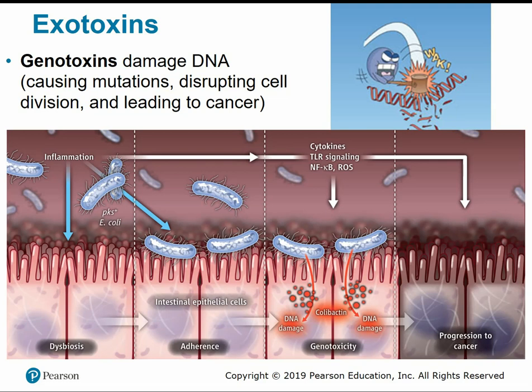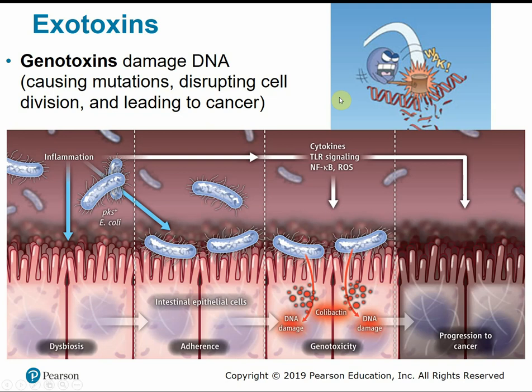Genotoxins damage genes or DNA and cause mutations that can disrupt cell division or lead to cancer. All cell structure and function is based on the genetic code — those instructions. So if we change or mutate those instructions, we could have abnormal cell function, uncontrolled abnormal cell growth, or cancer.